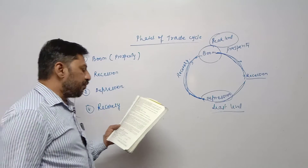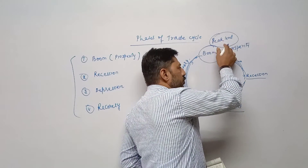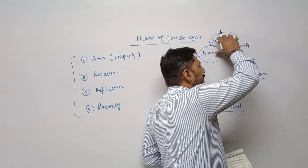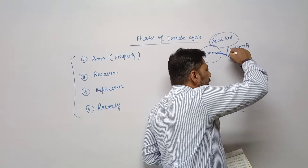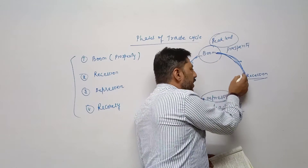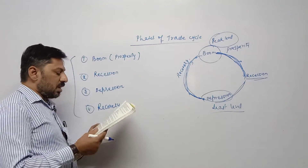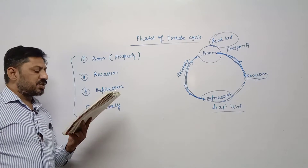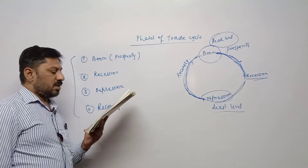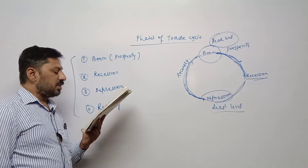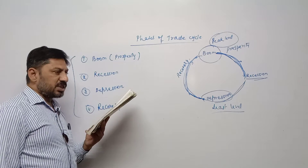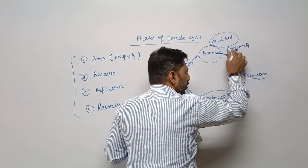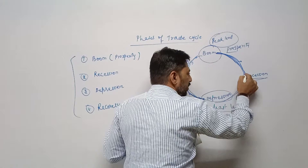Recession: this period follows the period of boom. After prosperity period, the recession period comes. When everything — production, demand, income — is at its peak level, then the point comes when it starts falling down slowly. That situation is called recession period. According to the textbook: this period follows the period of boom; when economic activity peaks and investment and employment have reached the highest possible level, a slowdown occurs. Demand slows down, investment slows down, employment reduces, production starts reducing — everything starts falling down. That stage is called recession period.